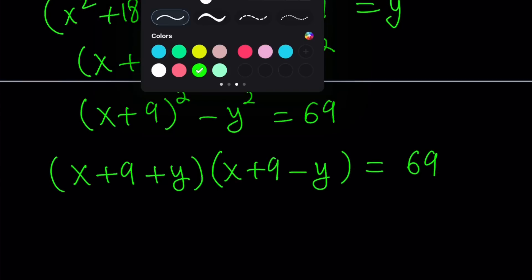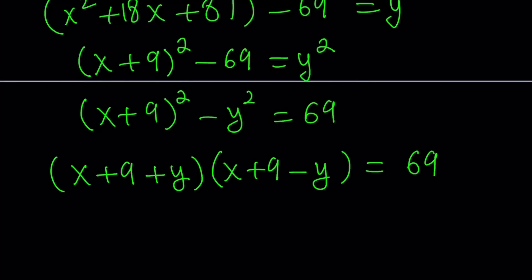This can be written as (x + 9 + y)(x + 9 - y) = 69. Awesome. Now, we can look at factors of 69. 69 is not prime, even though it's somewhat prime looking. Notice that 6 and 9 are both divisible by 3, which means the sum of the digits of 69, which is 15, is a multiple of 3. And it's, in fact, 3 times 23.